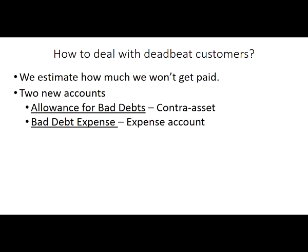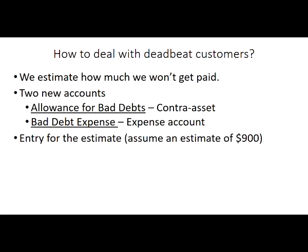We have two new accounts in this chapter. The first is the allowance for bad debts, which is a contra asset account — it is contra to accounts receivable. It will appear on the balance sheet right with accounts receivable, it will have a negative balance on the balance sheet, and it has a natural credit balance because it's a contra asset. The other is bad debt expense, which is an expense account with a natural debit balance. Our entry for the estimate — assuming an estimate of $900 — is a debit to bad debt expense for $900 and a credit to the allowance for bad debts for $900.